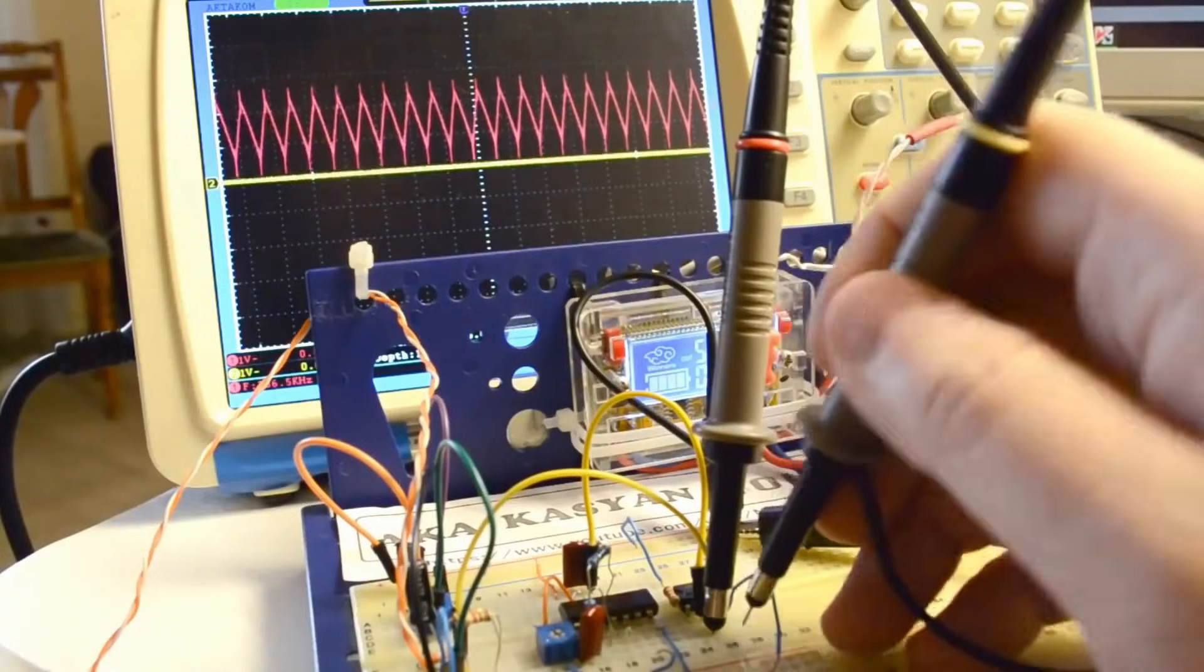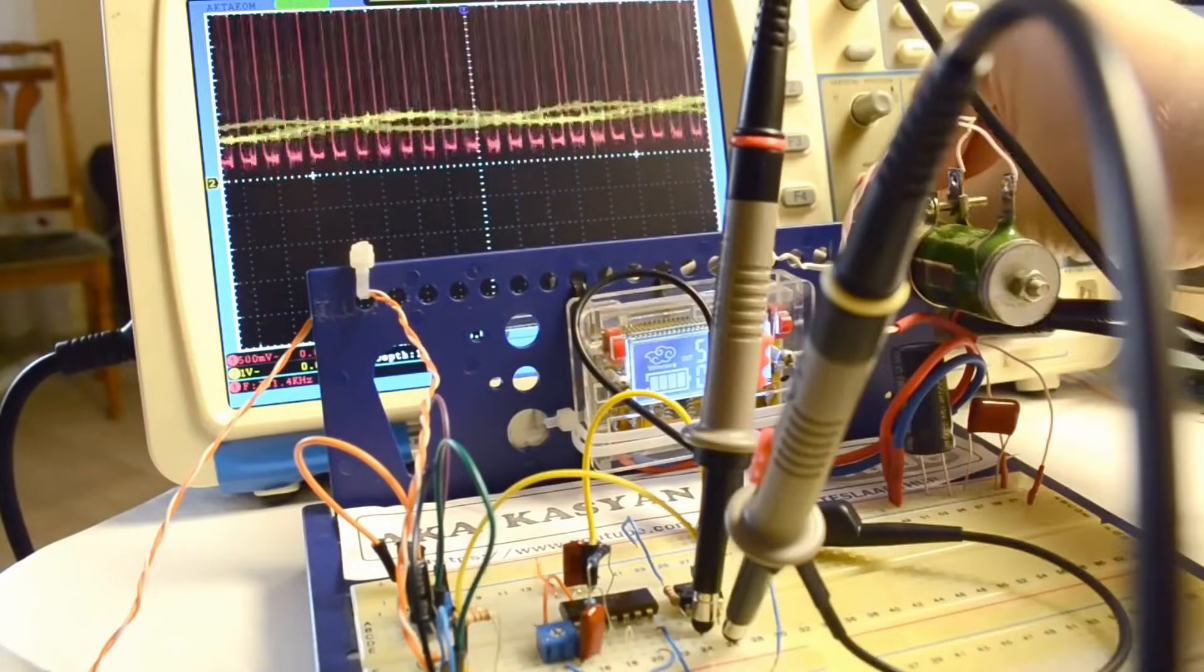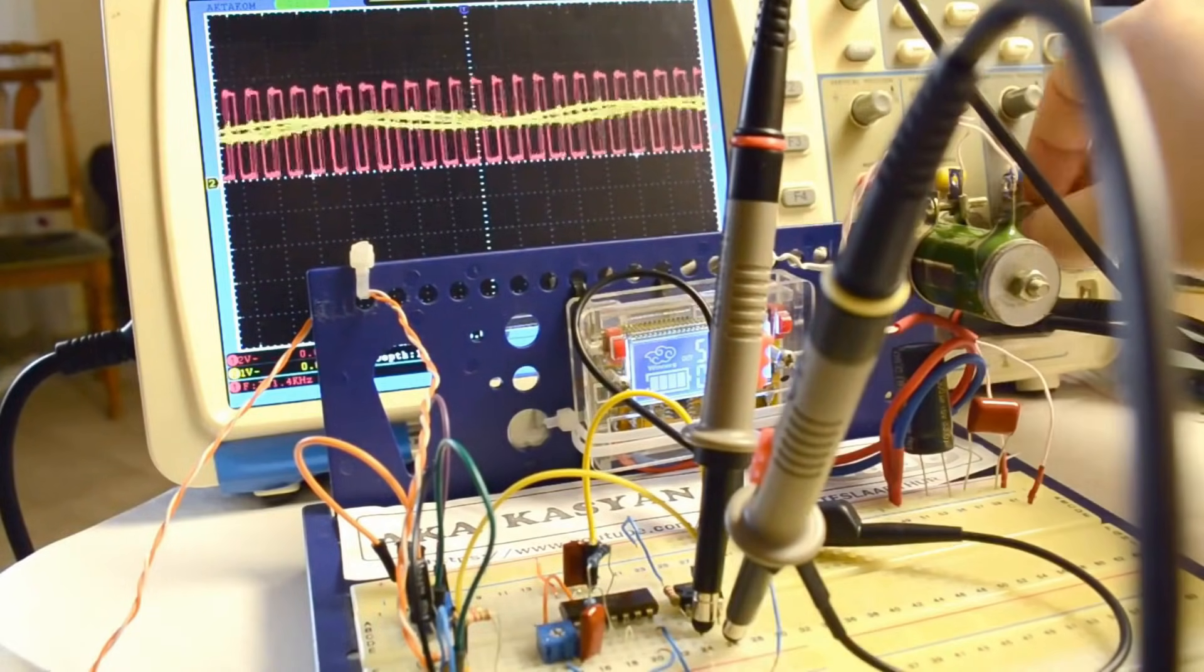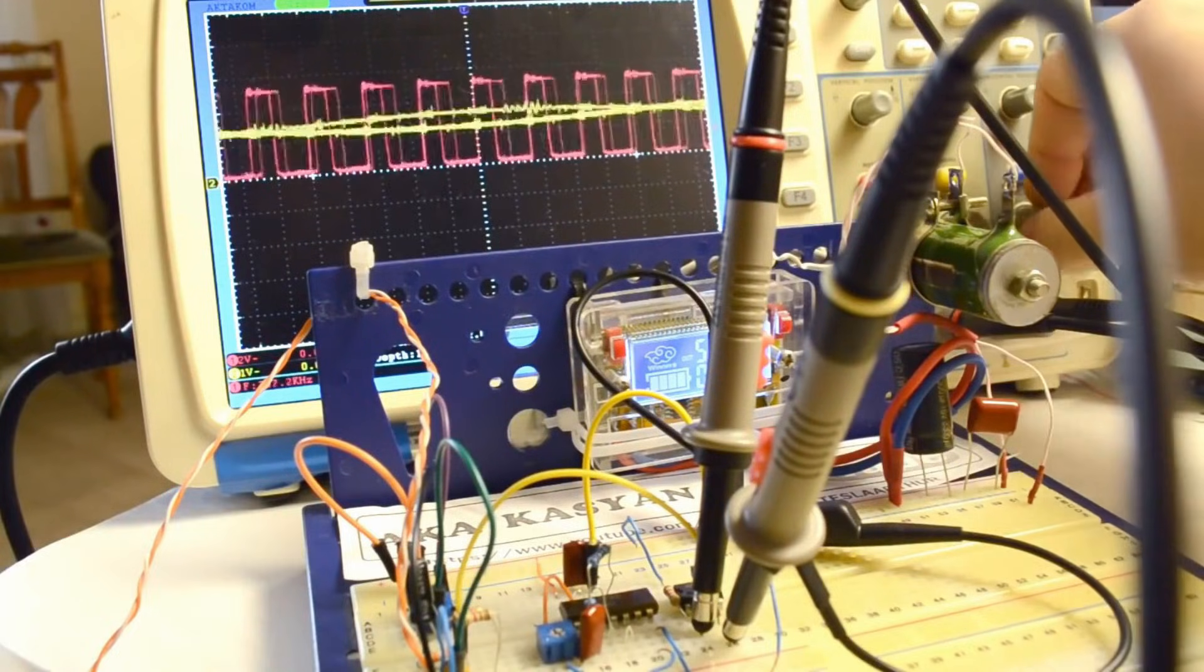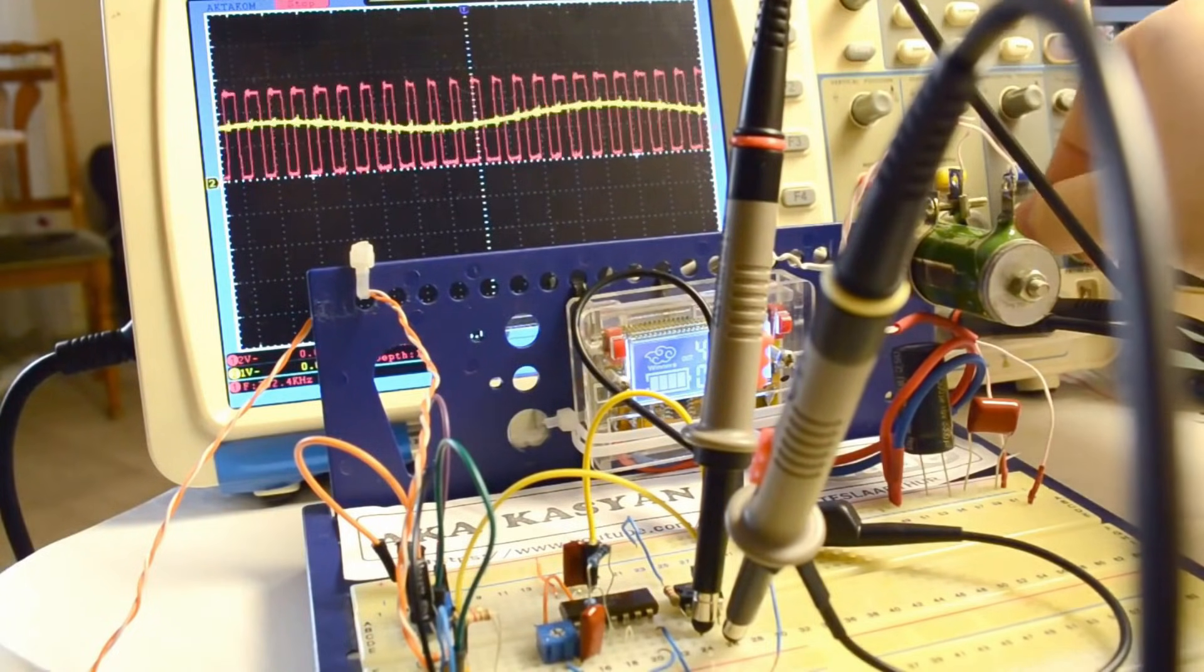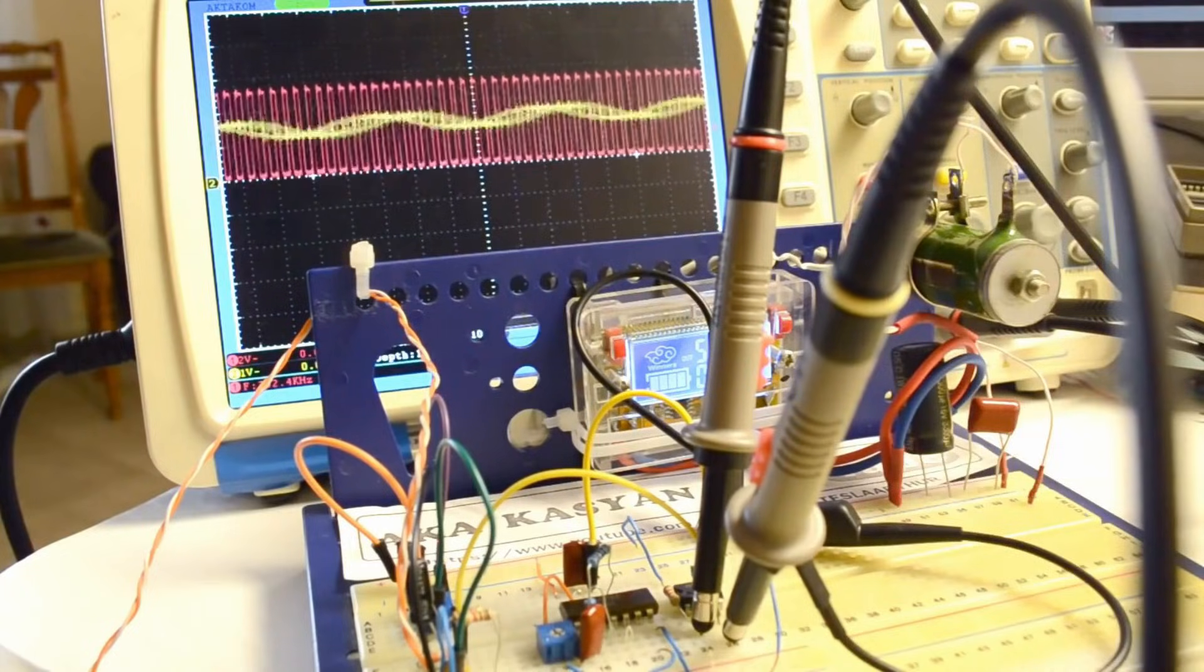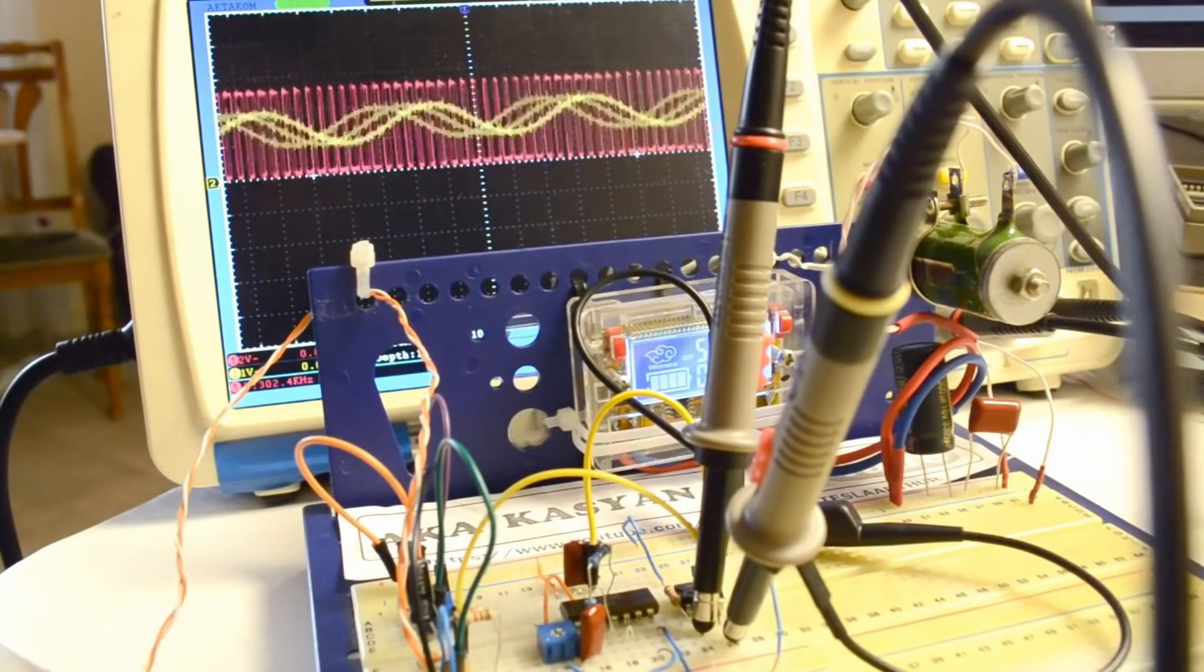Let's see what we got. A PWM signal with variable duty cycle is visible. A sine wave can be applied for clarity. The higher the voltage, the wider the pulse. Excellent!